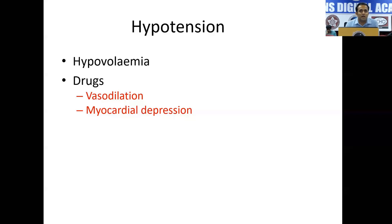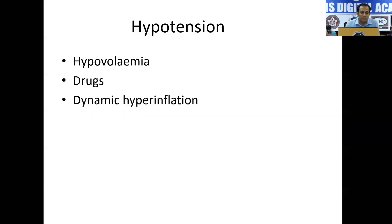There may be drugs that are used to treat the patient which can cause vasodilatation — for example, anesthetic medications and propofol. Or else there can be myocardial depression. COVID-19 can have myocardial involvement in approximately 10% of patients, so we should be wary of myocardial depression. There can also be dynamic hyperinflation, which I will show in the next slide.